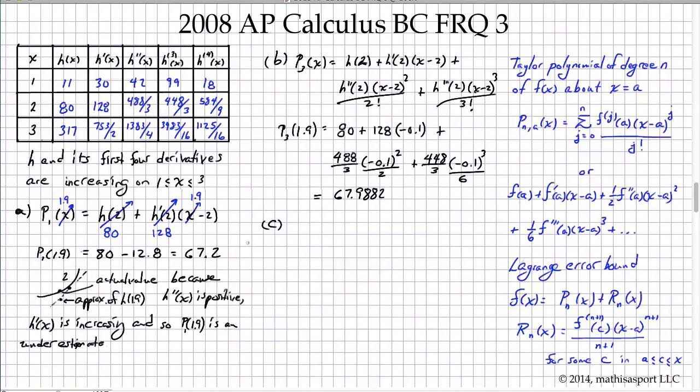Part C asks about the Lagrange error bound. So the Lagrange error bound is simply the largest that the remainder term could be in terms of its absolute value. And so we write that R3 of x is going to be the fourth derivative of the function at some value C intermediate between or in the interval between a and x times x minus 2 to the fourth over 4 factorial for some C between 2 and x.